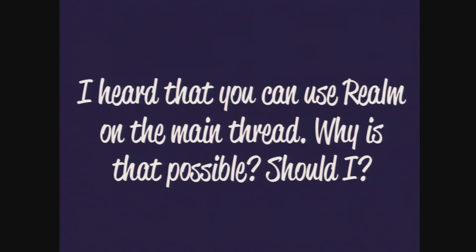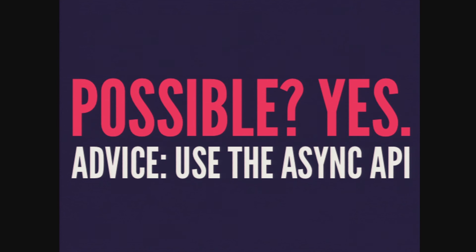Back to the question: can we use Realm on the main thread? Possible, yes. My advice: use the asynchronous API — it'll cause fewer problems. Even if you understand Realm's internals, if you're working on a team or as a consultant you may deliver the application to someone who sees something on the main thread and freaks out because they don't understand how Realm is able to work. Just use the asynchronous API. Tack async onto everything. It makes your application more reactive — fire and forget, and let me know when you're done. I've used it in production with RxJava successfully.